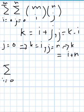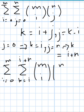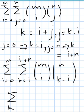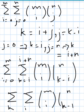So we rewrite the summation as: i from 0 to m, k from i to i plus n, of m-choose-i times n-choose-(k minus i). What we want to do is interchange the order of this summation — putting k on the outside and i on the inside — the same idea as changing the order of integration in a double integral in calculus.